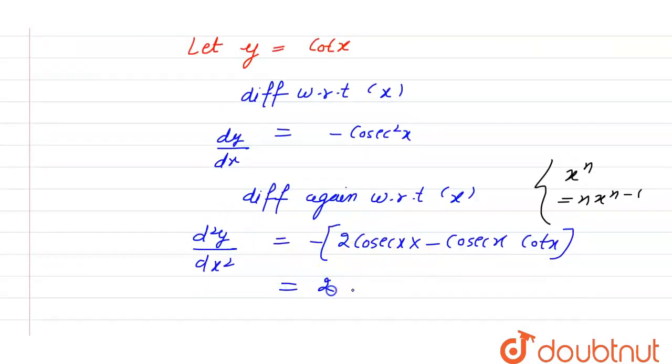So, minus times minus is plus. We will get 2 cosec²x cot x. Thank you.